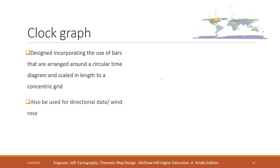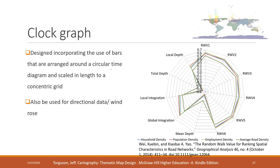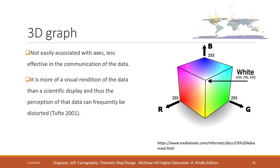We also have the clock graph, which is another variation of the bar graph. The clock graph can be used to compare multiple variables on a single visualization, and it is very useful for directional data and wind roses. Finally, we have 3D visualizations — one important thing to keep in mind is to try to avoid using 3D graphs, because people tend to have less accurate perception of 3D visualizations.